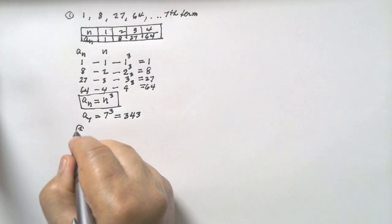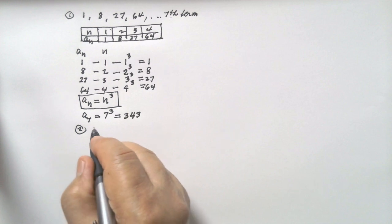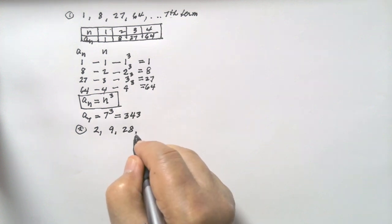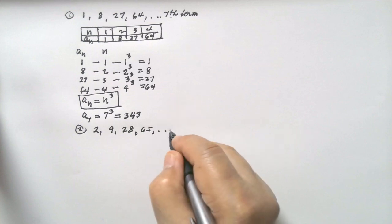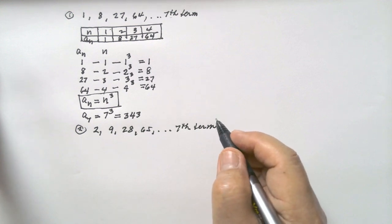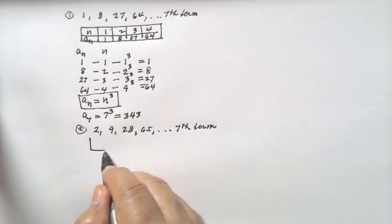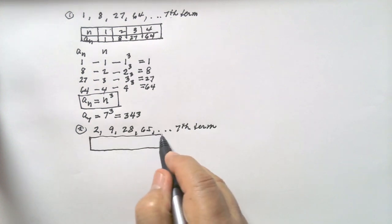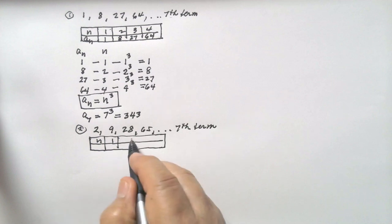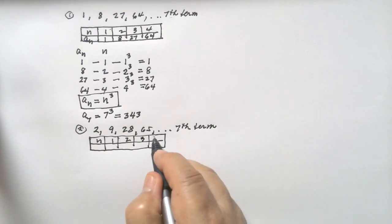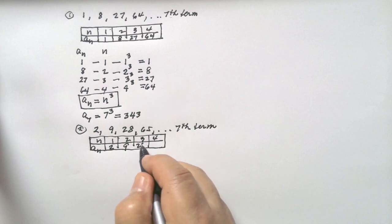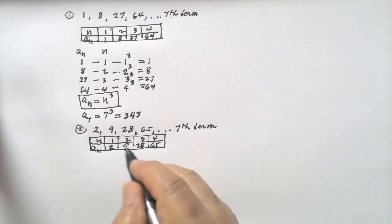Number two: the sequence is 2, 9, 28, 65. We are asked to solve for the seventh term using the explicit formula. Let's put this in a table. For n: 1, 2, 3, 4. A sub n: 2, 9, 28, 65.